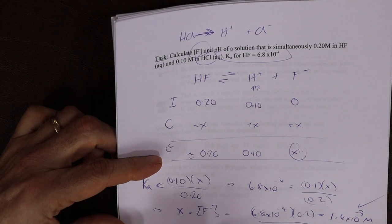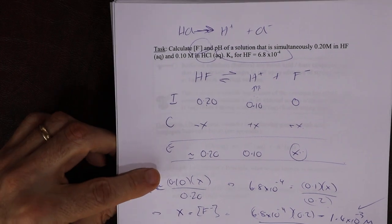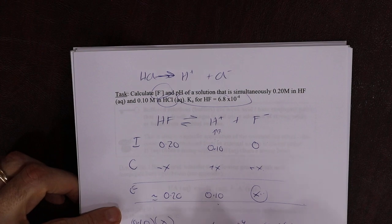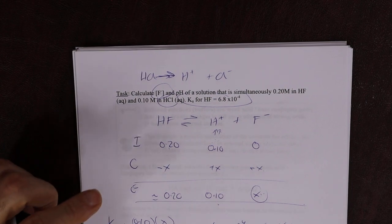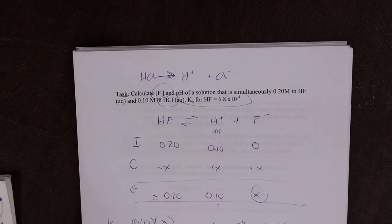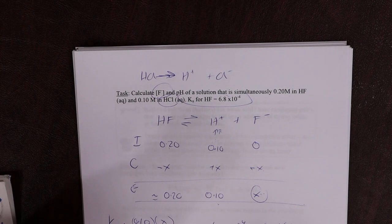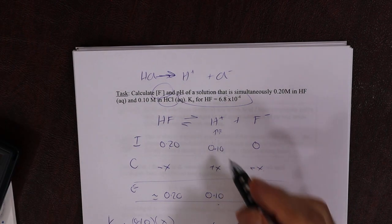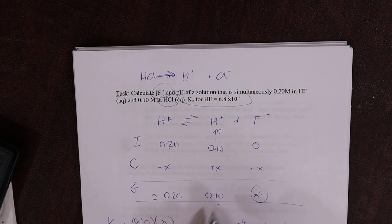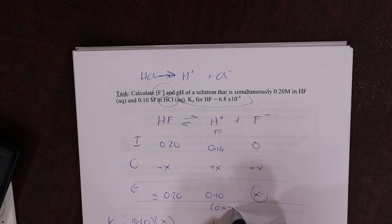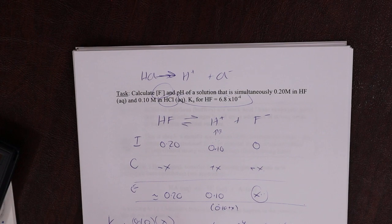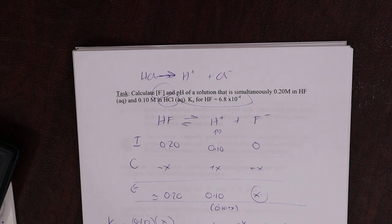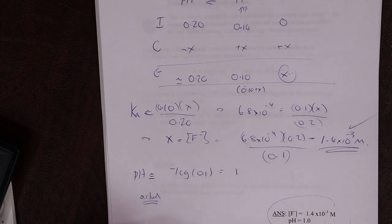Now, pH is easy. pH approximately equals, the concentration of H plus is approximately 0.1, so it's minus log of 0.1, which equals 1. What happens if we actually count in the X? It's actually 0.10 plus X. The actual pH is the minus log of 0.1 plus 6.8 times 10 to the minus 4.